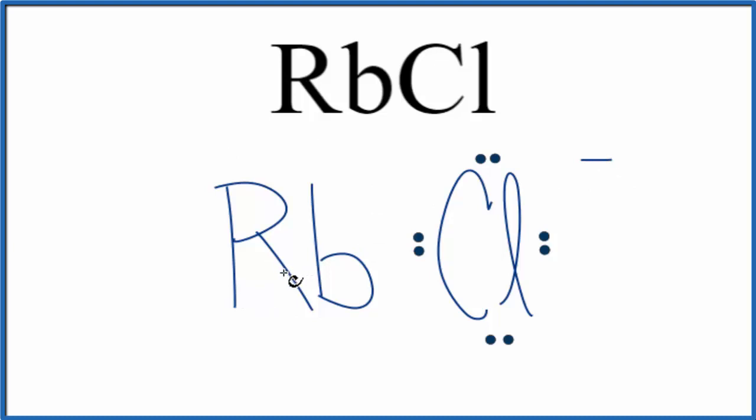The rubidium lost an electron. Electrons are negative. It lost a negative charge. It becomes 1+. Let's draw brackets around the chlorine to show that the rubidium lost that electron. It transferred the electron to the chlorine.